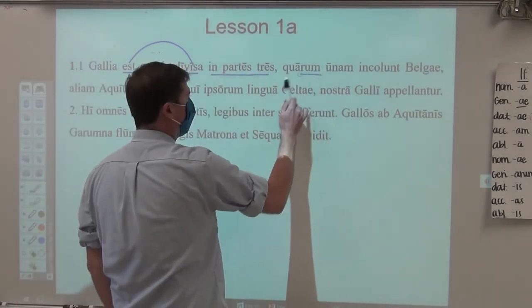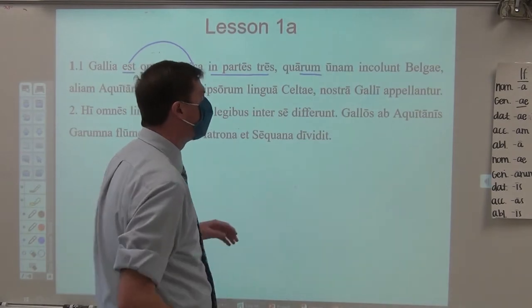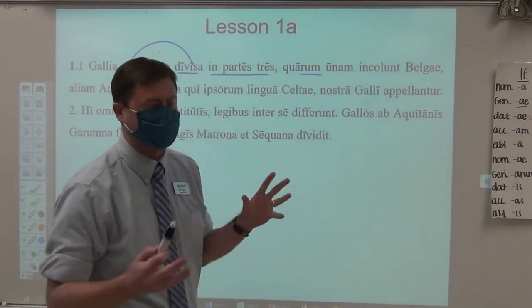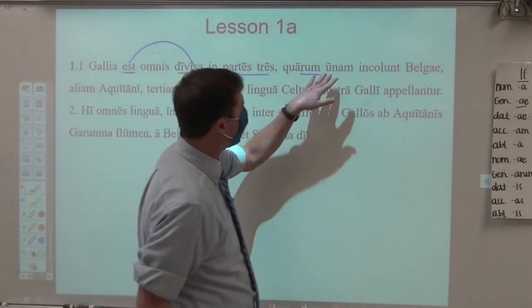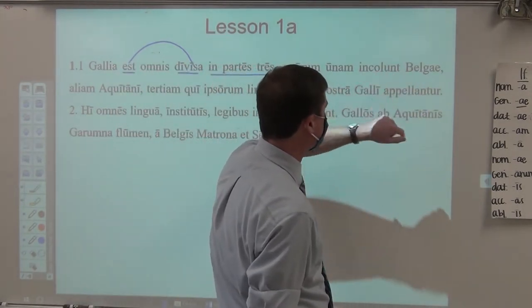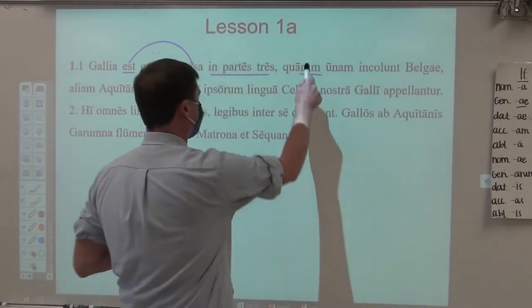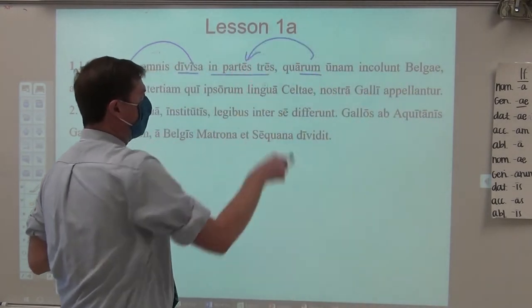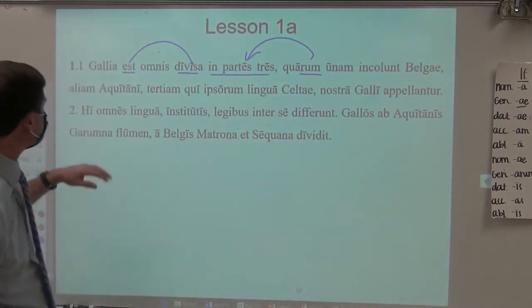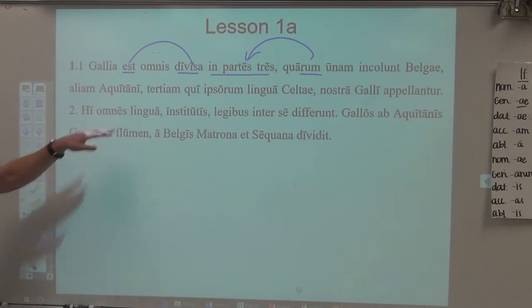One of which — 'quarum' being genitive, showing here part of a whole — one of which the Belgians inhabit. So the Belgians inhabit one of which, referring obviously to those parts. Another, the Aquitani inhabit.